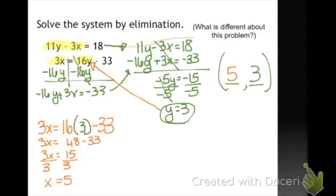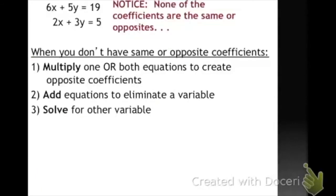So what if we have an equation like this? Notice that none of the coefficients in this system are the same or opposite. And remember, our goal is to create opposites to get rid of one of our variables. So if I have something like this, that's no problem — I can multiply one or both of the equations to create opposites. And then I'm going to use the same process: add the equations and solve for the other variable.